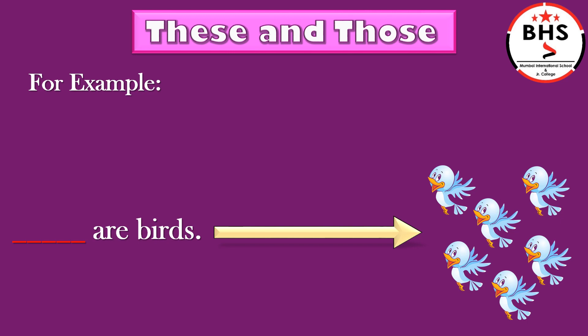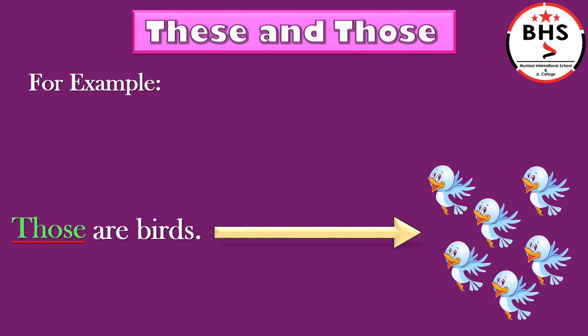Dash are birds. Children, here, there are more than one bird and the long arrow shows they are far. Hence, we will use those. Those are birds.